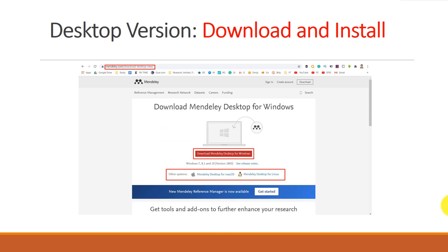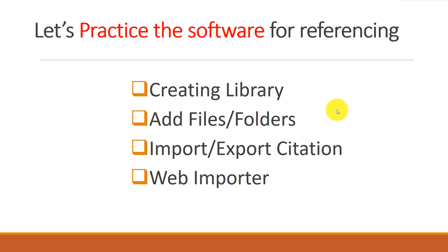There is a desktop version of Mendeley software as well as a mobile version. You have to download and install the desktop version from the Mendeley website. Go to mendeley.com and you will get this kind of interface to download the software. Let's download and practice the software for referencing.